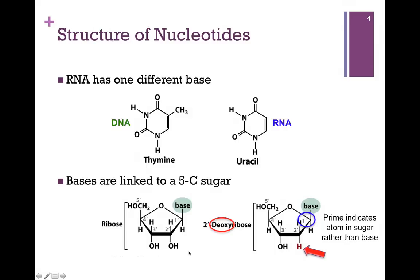Let me point out the numbering system here for the sugar. In order to distinguish these atoms from those in the base, we put a little prime with those numbers. We have the 1', 2', 3', and so forth positions. Notice for ribose, which is part of RNA, we have a 2' OH, whereas in DNA we're missing an oxygen at that 2' position, and that's why it's called deoxyribose.